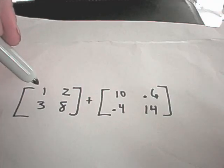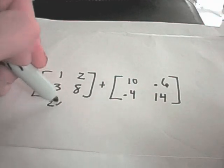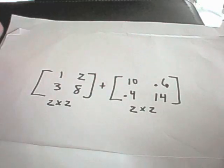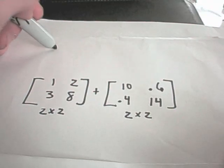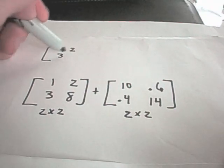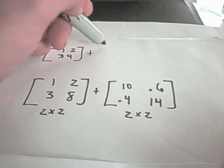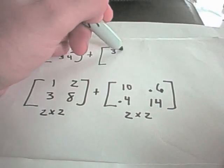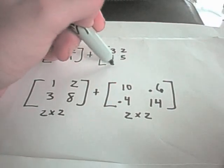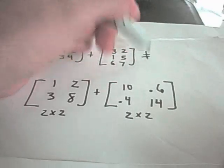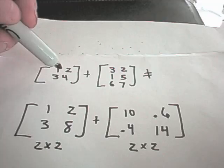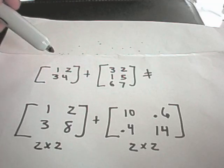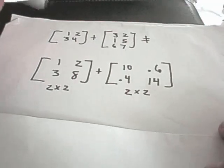So notice our first matrix here is a 2x2 matrix, that's two rows and two columns. And the other matrix is also a 2x2 matrix. If you had something of the form, for example, maybe it was a 2x2 and you wanted to add to it something that was a different size, this you simply cannot add because you don't have the same number of rows and columns. So that's one basic thing to remember.